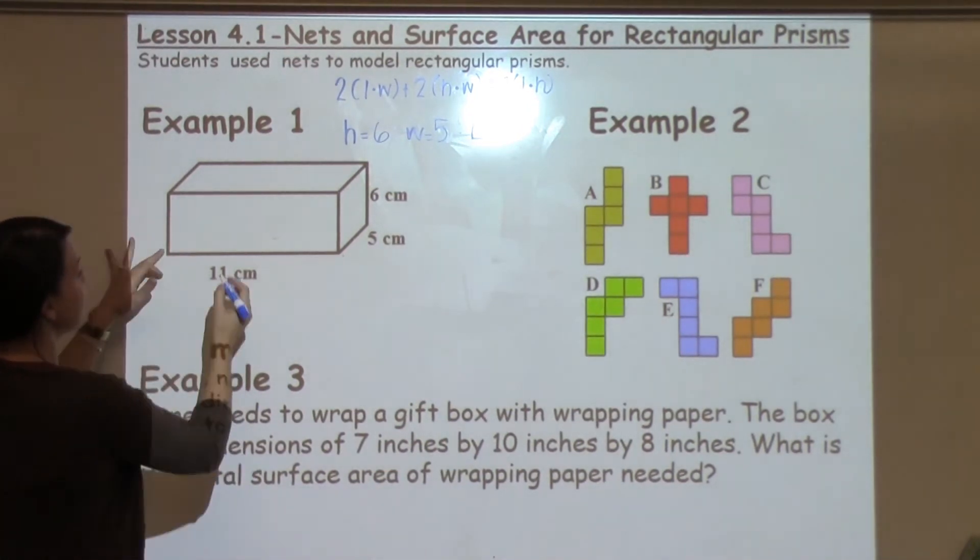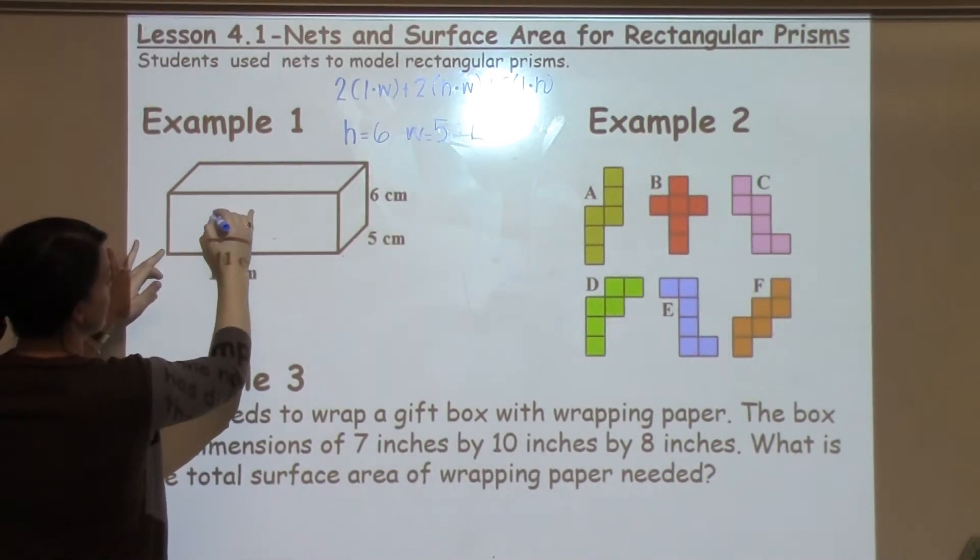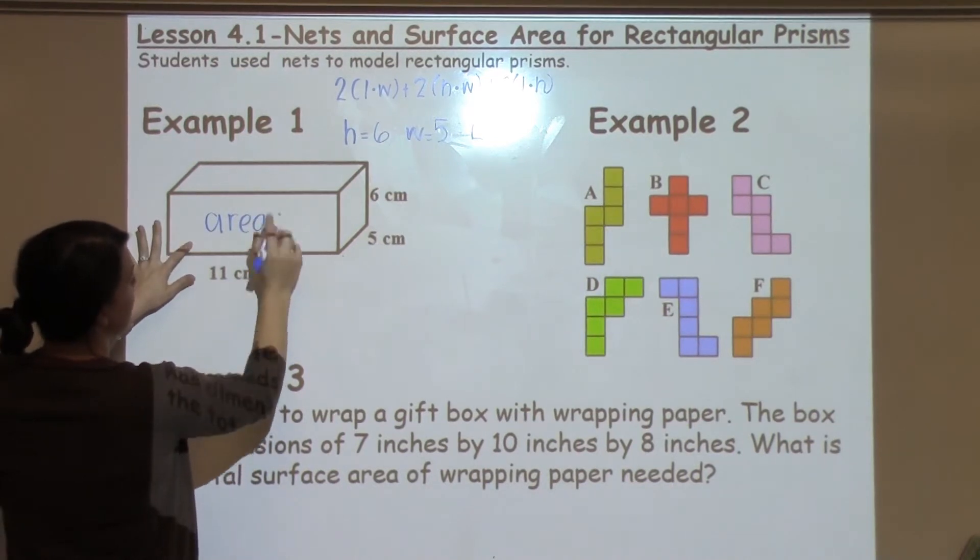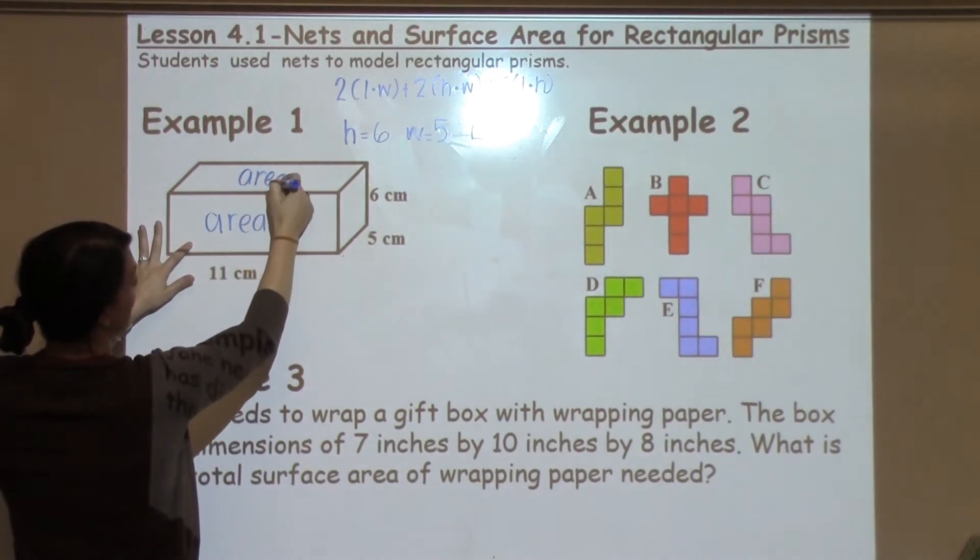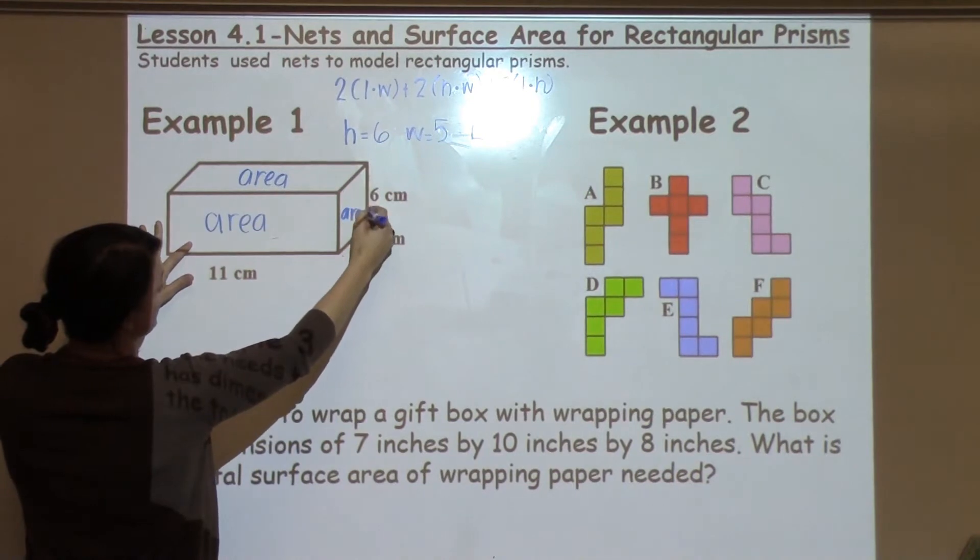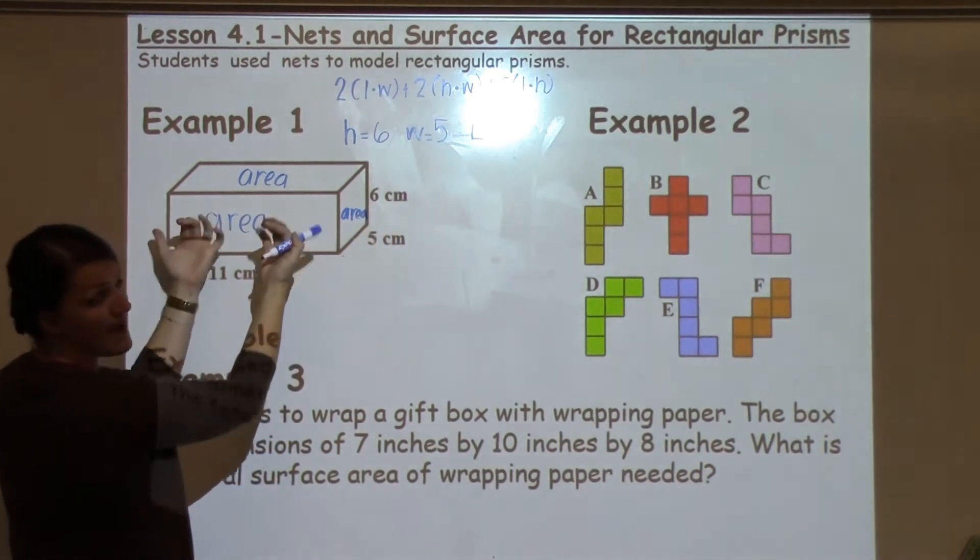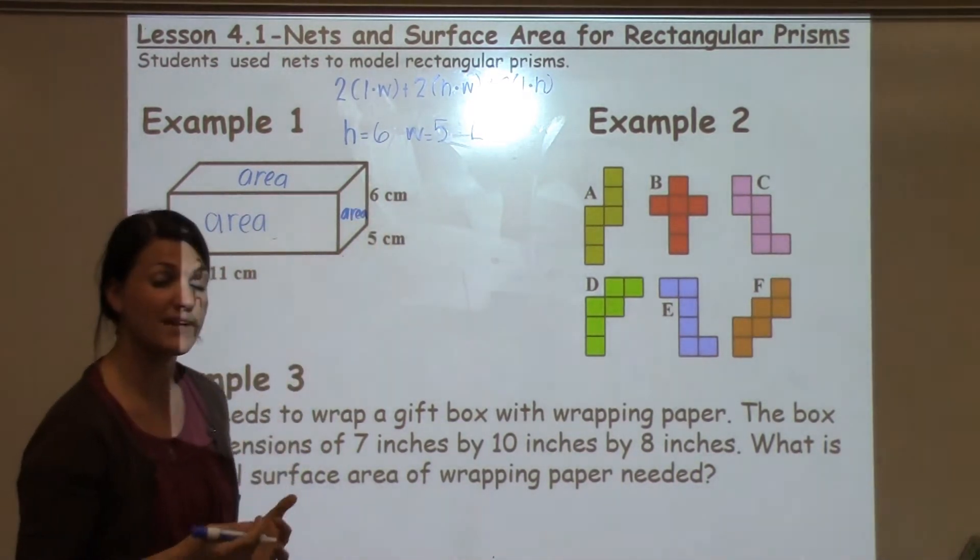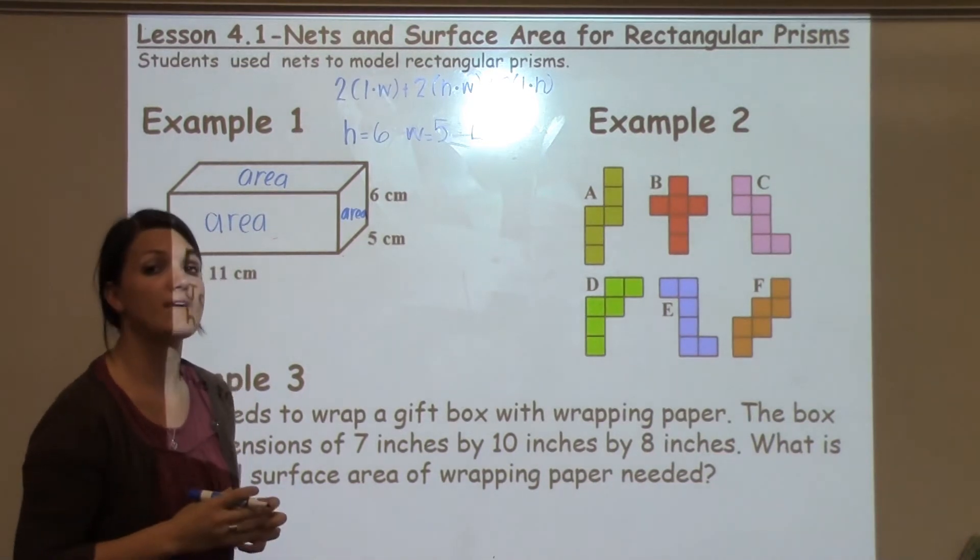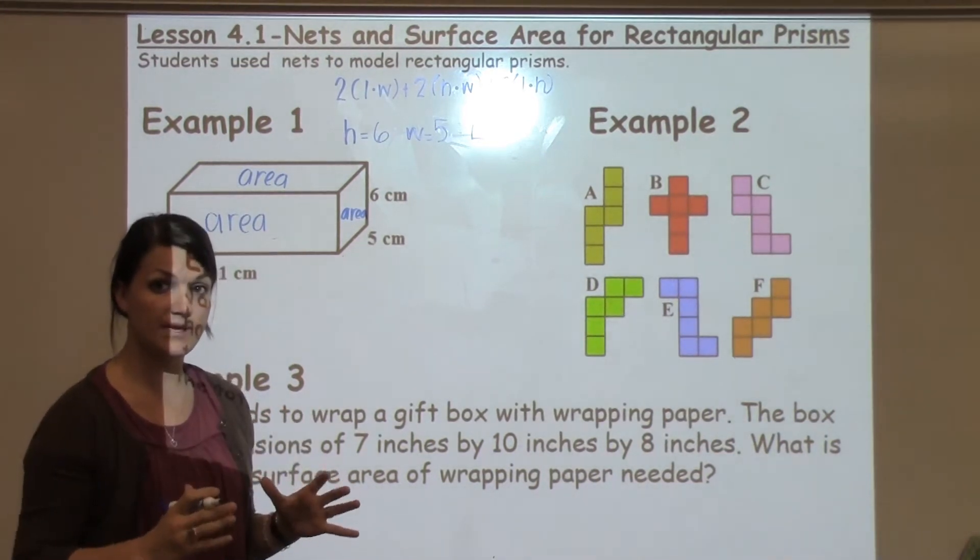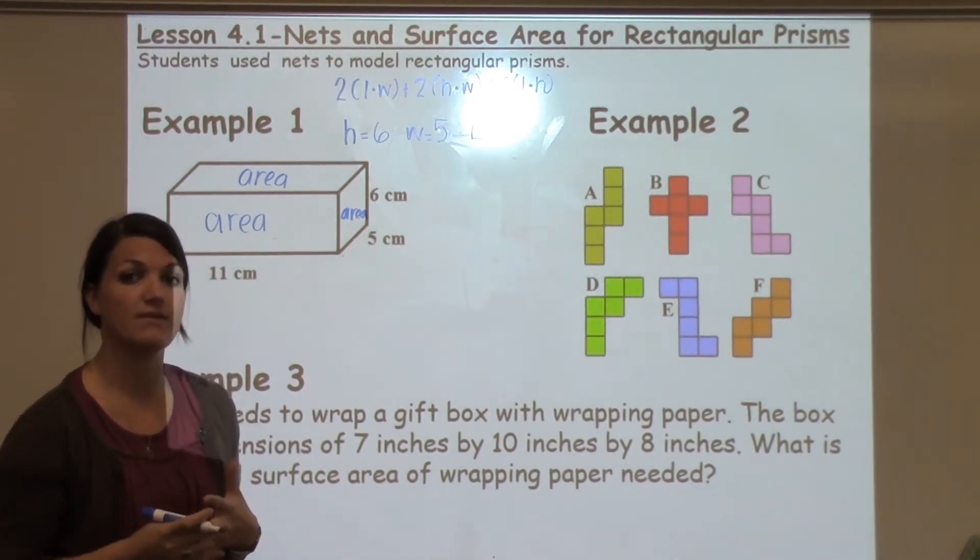Surface area is finding the area of every single face on the shape. So finding the area of this face, finding the area of this face, of this one here, the one on the bottom, the one on the back side and the other side, even the faces that we can't see, we're finding the area of each of those faces and putting them together, that's how you find surface area.